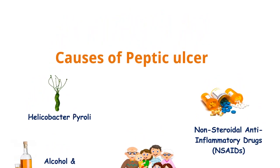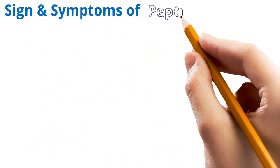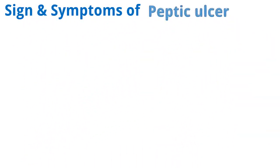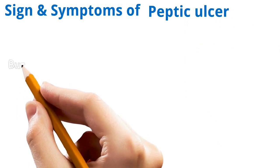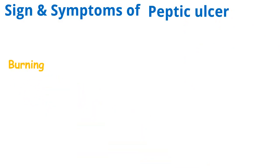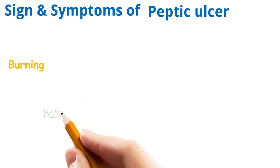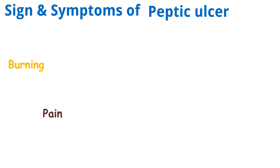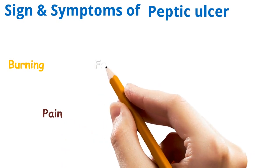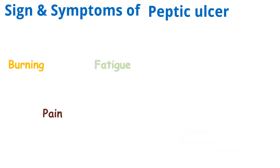Now moving to signs and symptoms of Peptic Ulcer. These include a burning sensation to the affected area, severe pain to the affected area such as the stomach or esophagus where ulceration is being observed, and fatigue may be observed by the patient.